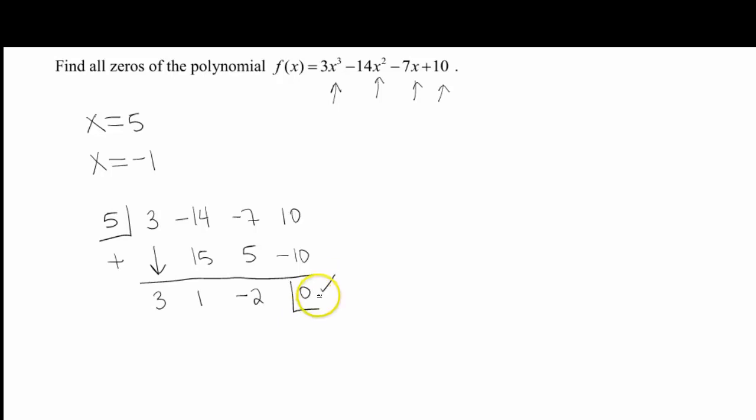And that gives me a 0 for a remainder. Good, so that's kind of my gut check. I want to make sure that I don't have anything left over, because if I did, then 5 was not an actual 0. So that means my polynomial just got knocked back to 3x squared plus x minus 2.